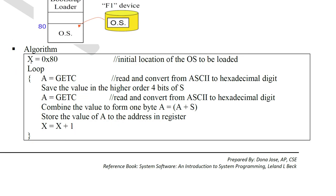The bootstrap loader algorithm: X is set to 80, meaning loading starts at location 80. A equals getc — read the first character and save the value in the higher-order form of register S. Then A equals getc — read the second character. Combine the two characters to form one byte: A equals A plus S. Then store the value of A to the address in register X.